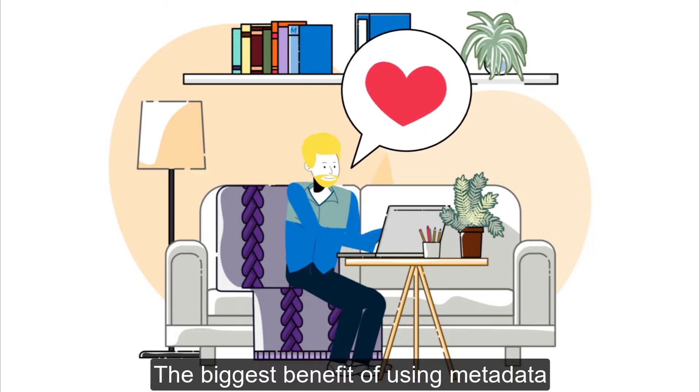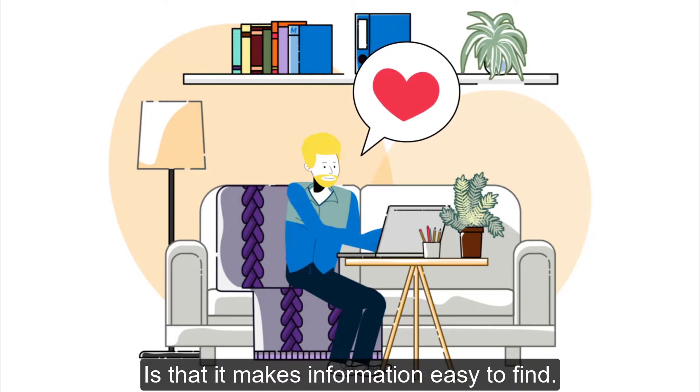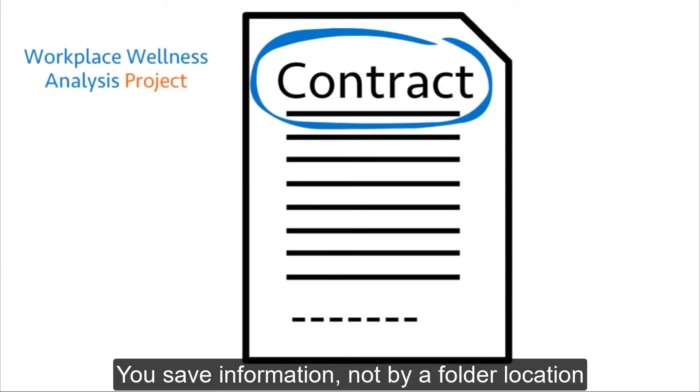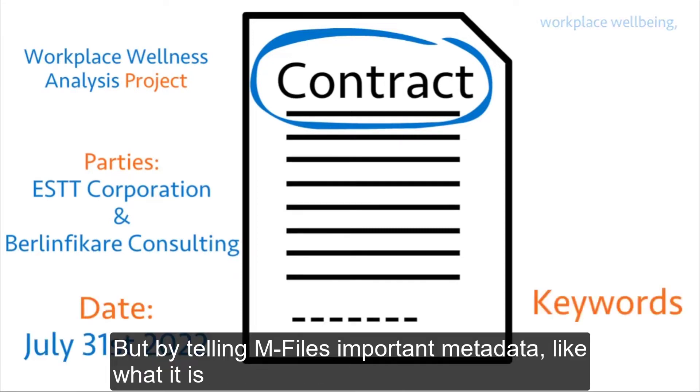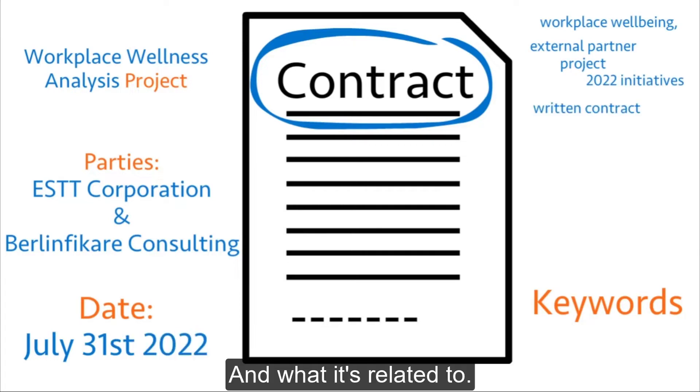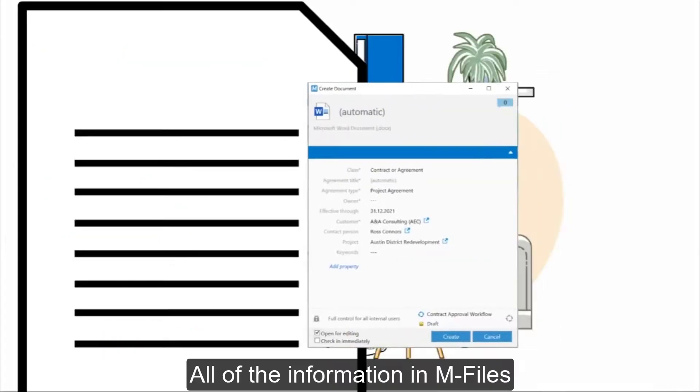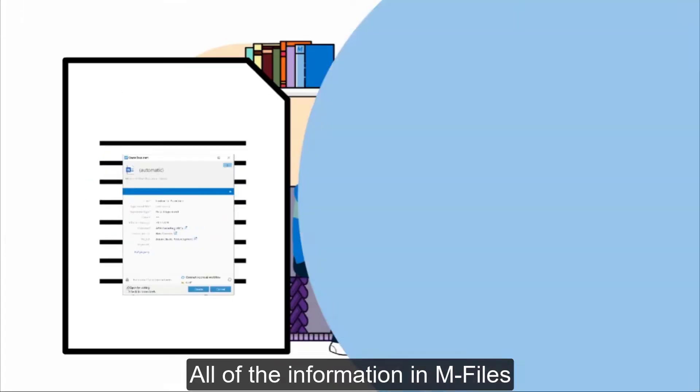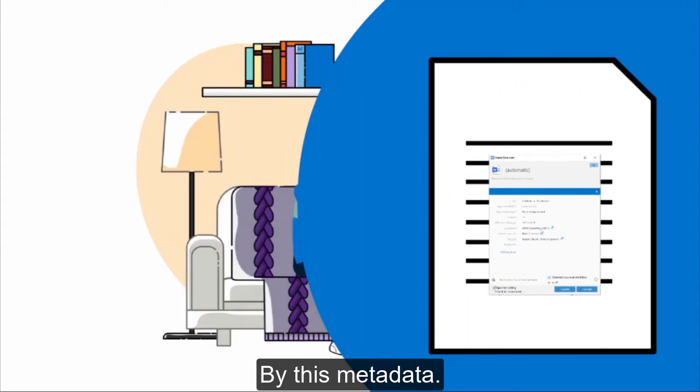The biggest benefit of using metadata is that it makes information easy to find. You learned that in M-Files, you save information not by a folder location, but by telling M-Files important metadata like what it is and what it's related to. All of the information in M-Files is stored and organized by this metadata.